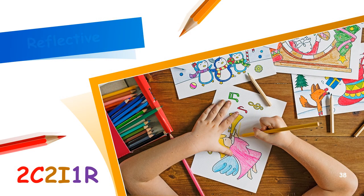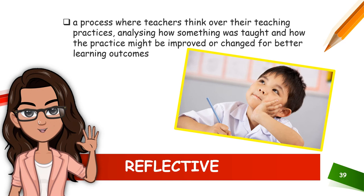The last pedagogical approach is reflective — the one R. Reflective teaching is a process where teachers think over their teaching practices, analyzing how something was taught and how the practice might be improved or changed for better learning outcomes. Points of consideration in the reflection process include what is currently being done, why it's being done, and how well students are learning. You can use reflection to learn more about your own practice, improve a certain practice, or to focus on a problem students are having. This is the approach wherein teachers reflect and analyze their own practice or teaching strategies, and consider alternative means through localization.